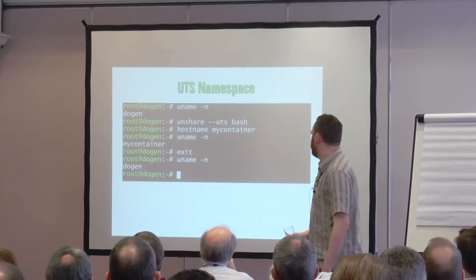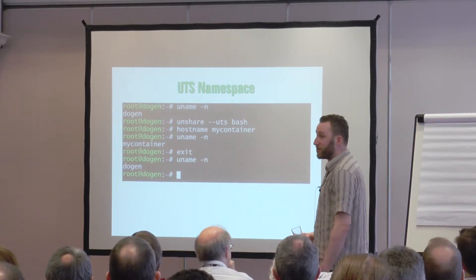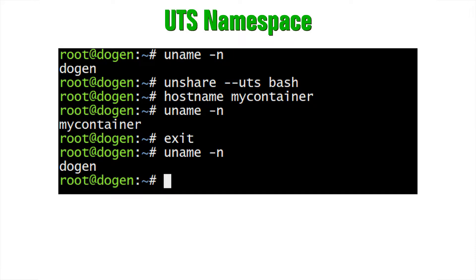The UTS namespace is a pretty simple one — it just lets you change the hostname. I'm firing up a Bash shell here and changing the hostname inside it. You can see it's changed. When you exit that shell back into the original system namespace, it's still your laptop's hostname. Again, no other process was affected by any of those changes.